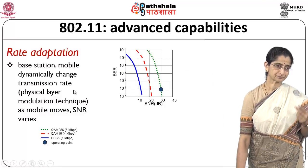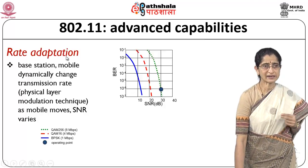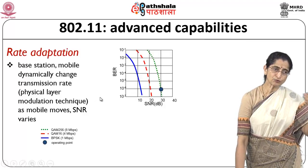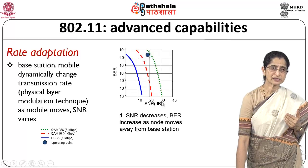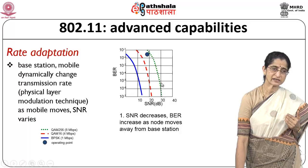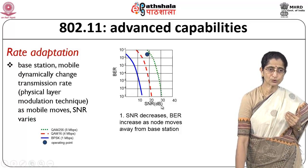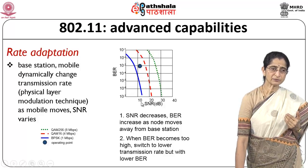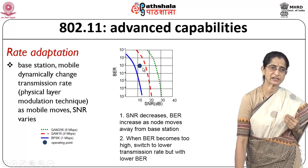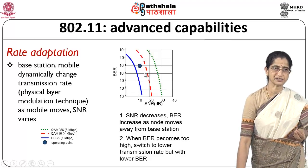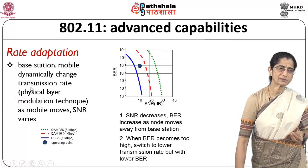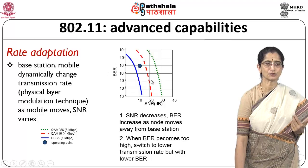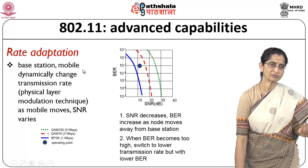802.11 also supports advanced capabilities. One is rate adaptation: if a mobile moves away and the bit error rate becomes unacceptable due to decreasing SNR, the device switches to a different physical layer transmission mechanism — using a lower-rate modulation technique such as moving from QAM 256 to QAM 16 or BPSK — to maintain an acceptable bit error rate. This rate adaptation is now provided on many 802.11 devices.